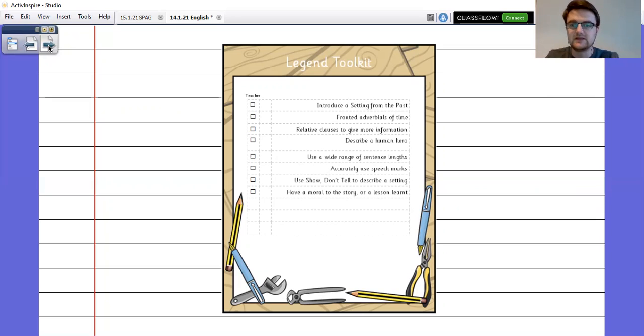Have you described a human hero? So in this case, have you described Brightman what he's wearing, what he's like? Have you used a wide range of sentence links? Have you accurately used speech marks if you can? Have you used show, don't tell to describe that setting? And is there a lesson learned in the story? So do the elders learn their lesson by the end?